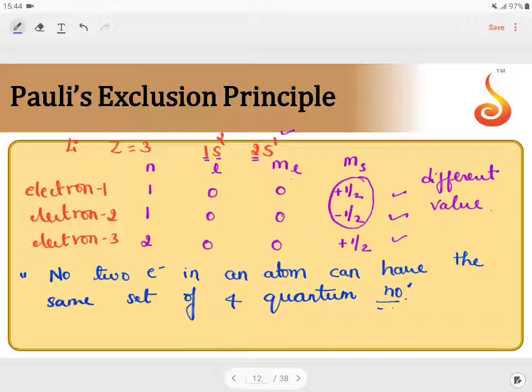Each and every electron can be differentiated with the help of quantum numbers.